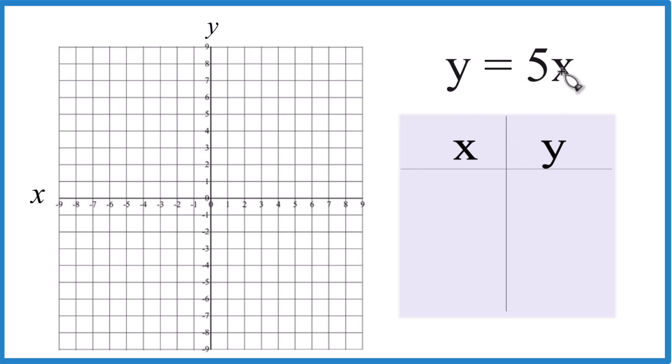So what we'll do is we'll put values in for x here, and then we'll do the math. We'll get y, we'll have our points, and then we'll graph them, and that'll give us the line for y equals 5x.